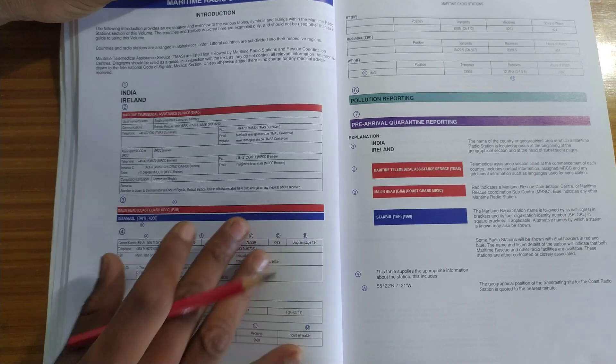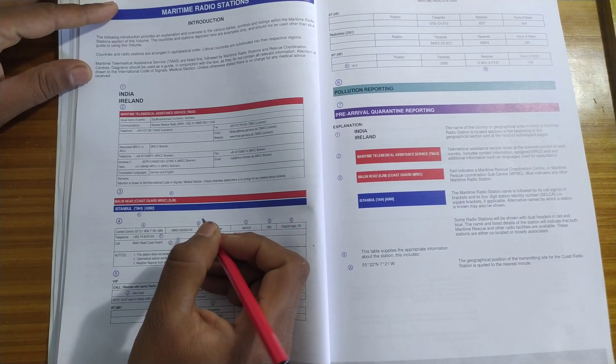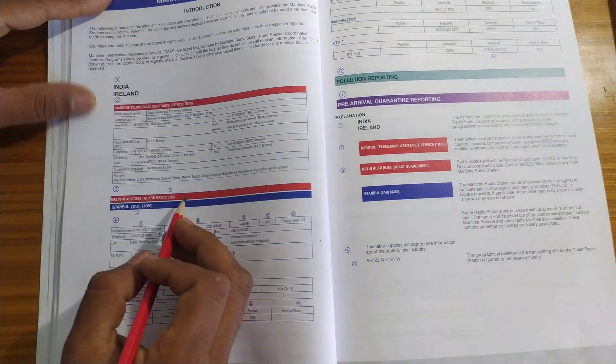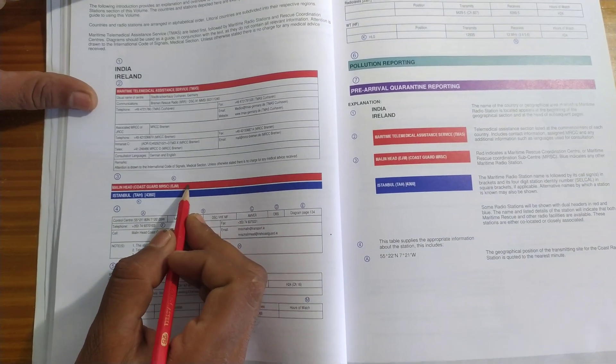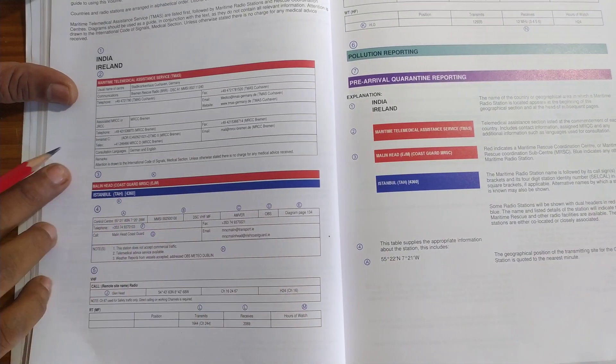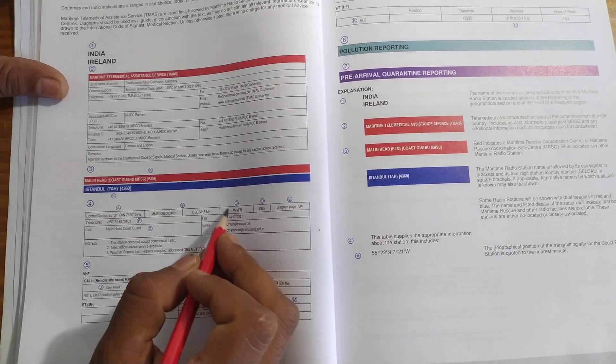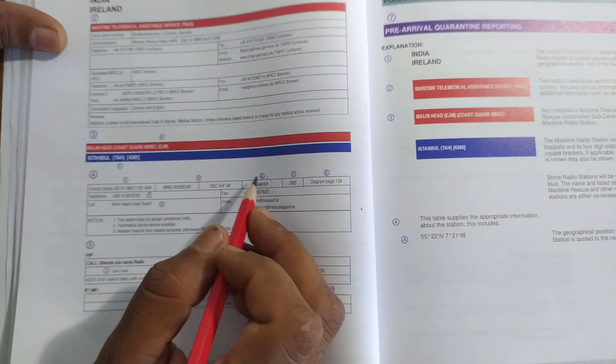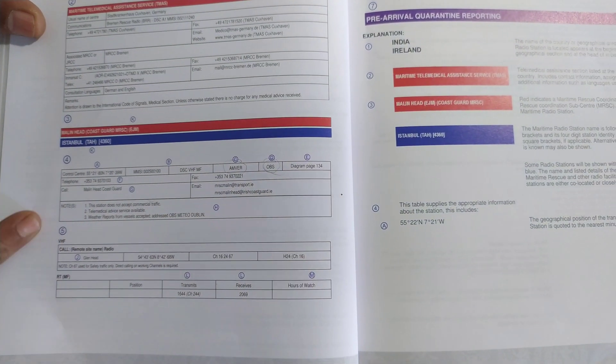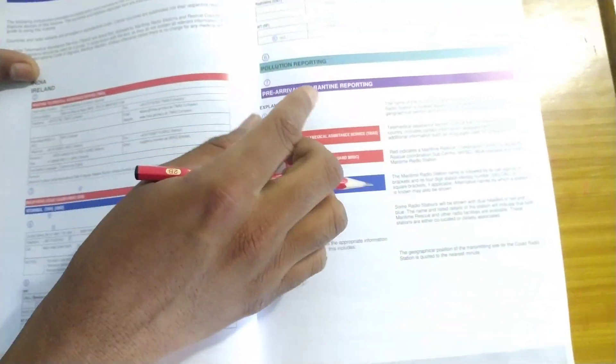The basic example of how to read this: they will give you the country code, then comes all the telemedical advice, then the MRCC. This is an MRCC, this is a normal coast station. If it is red, it is MRCC. Then their contact details, and if they are going to accept AMBER, if they are going to accept weather, all these are just contact details.